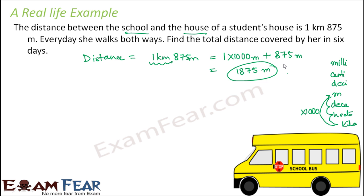Now every day the girl walks both ways. That means while going she walks 1875 meters. While coming back also she walks 1875 meters. So that means both ways would mean how much distance is she covering in 1 day? 2 into 1875 meters. That is basically 3750 meters. So this is the distance that she is covering in 1 day.